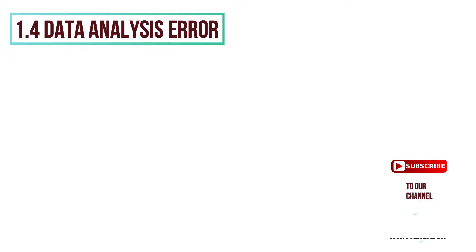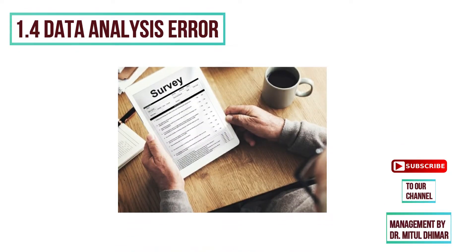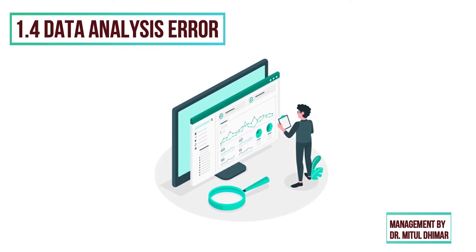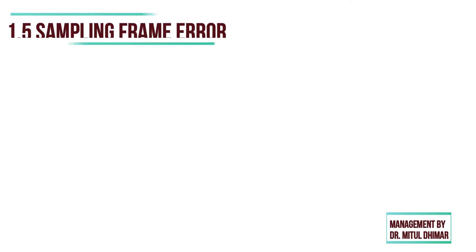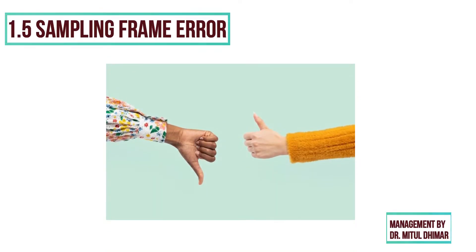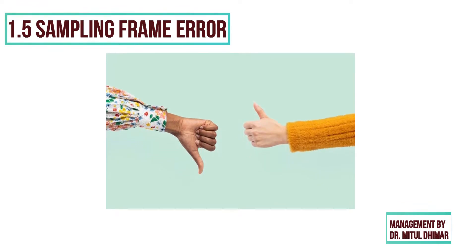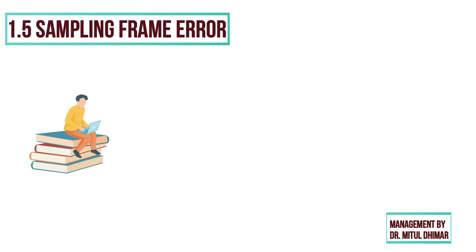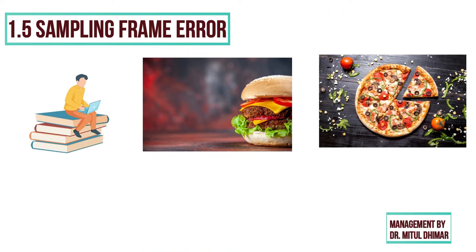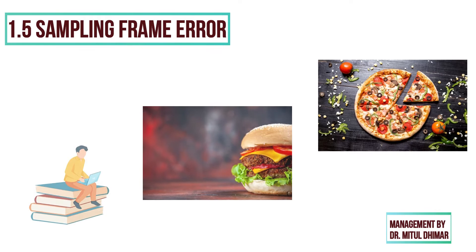Number 4: data analysis error. This error can occur when data from questionnaires are coded, edited, analyzed, or interpreted. For example, incorrect coding or the wrong use of a statistical analysis procedure. Number 5: sampling frame error. It occurs when a sample is drawn from an inaccurate sample frame. For example, a researcher interested in finding why people prefer McDonald's selected a sample from the list of customers of a US pizza chain.